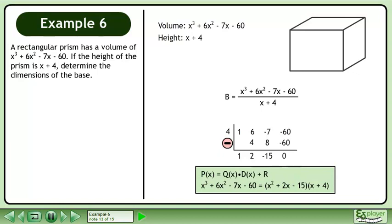Using p equals q times dx plus r, we can express the polynomial x cubed plus 6x squared minus 7x minus 60 as the product of the factors x squared plus 2x minus 15 and x plus 4.